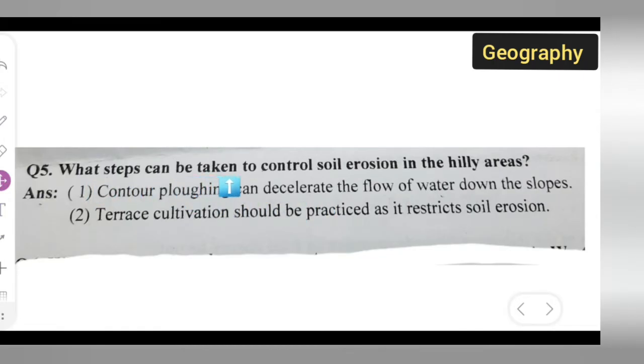So what steps can be taken to control soil erosion in hilly areas? The first point is contour ploughing can decelerate the flow of water down the slopes.